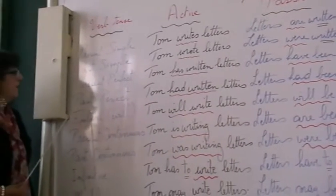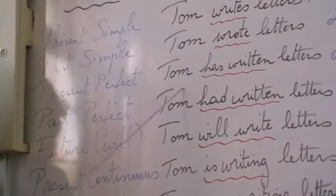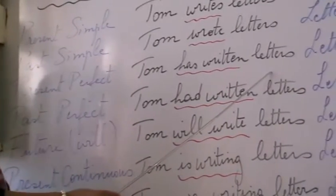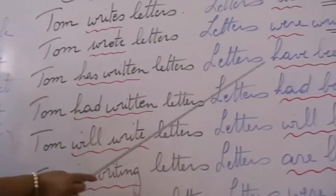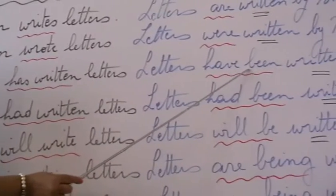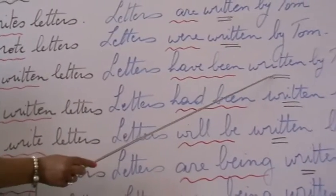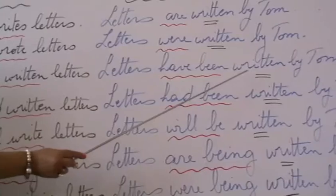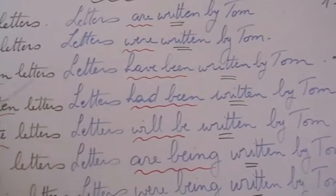Number three, we have the present perfect tense. Tom has written letters. So here it will be: letters have been written by Tom. 'Have been' is the present perfect of the verb 'to be', plus the past participle.